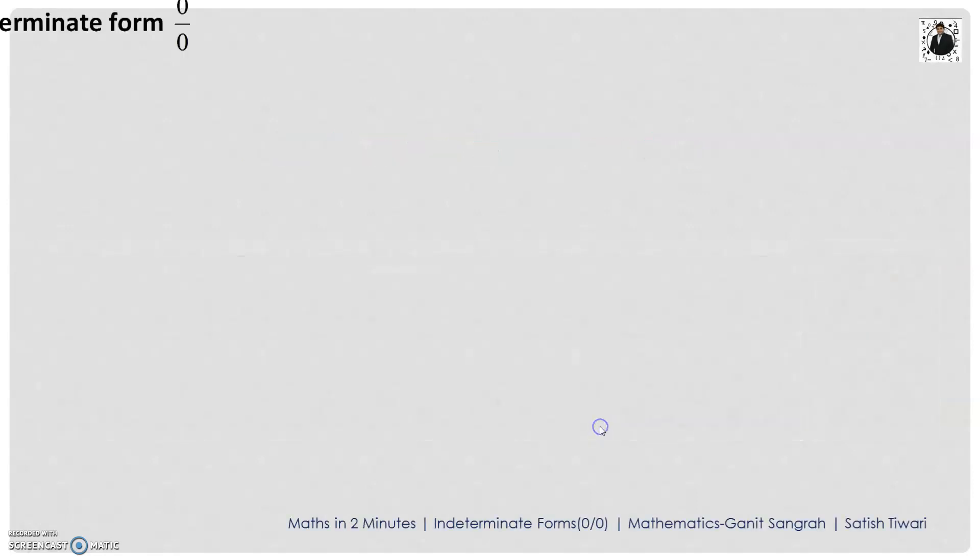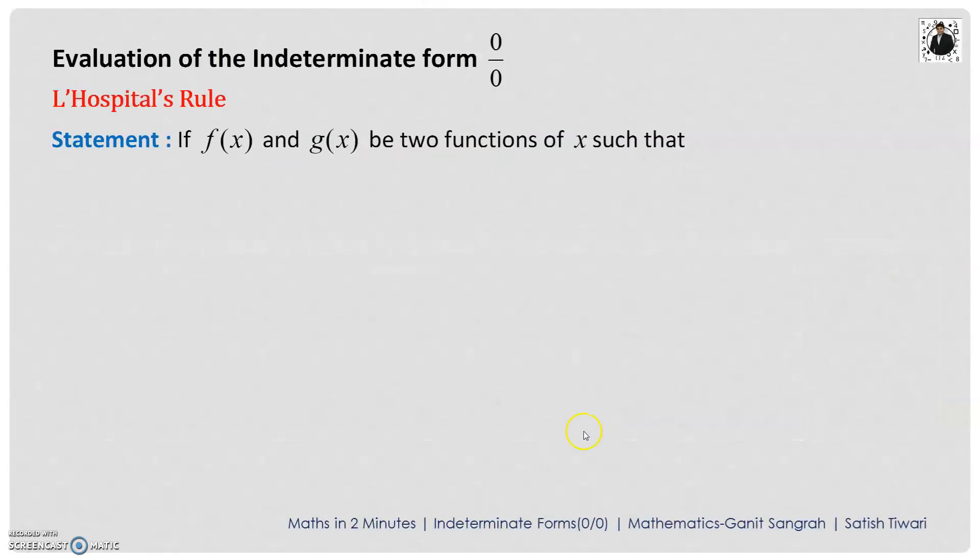So first of all we will see the statement of this L'Hôpital's rule. What is it? If f and g be the two functions of x such that the limit value of f and g when extending to a, it is what? 0.